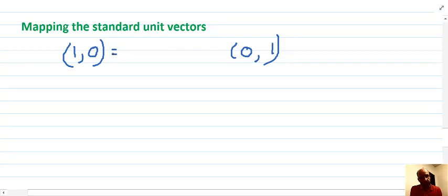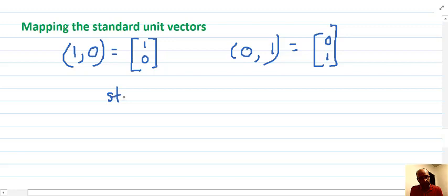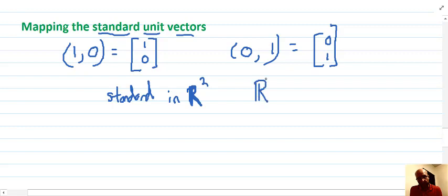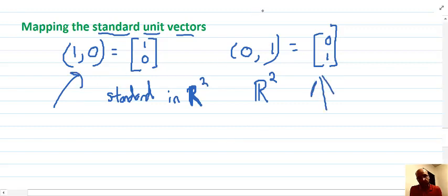So with unit vectors, if we mapped (1,0) as a column vector or column matrix, column vector is the common term, it would look like that, and (0,1) would look like that. So these are called the standard unit vectors. These are the standard unit vectors in R². So R² - two-dimensional real numbers it refers to. So those two are the standard unit vectors, (1,0), and (0,1) for R².